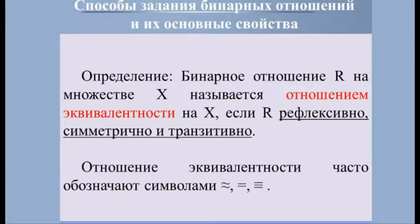Важным видом бинарного отношения является отношение эквивалентности. Бинарное отношение R на множестве X называется отношением эквивалентности на X, если R рефлексивно, симметрично и транзитивно. Отношения эквивалентности часто обозначают специальными символами. Самое наглядное отношение эквивалентности — разделение учащихся конкретной школы на классы.